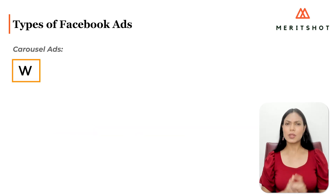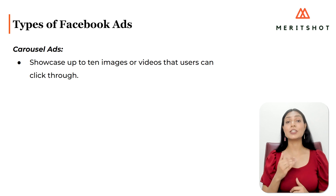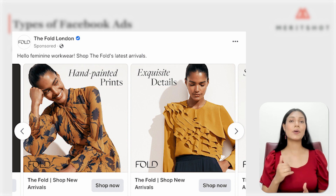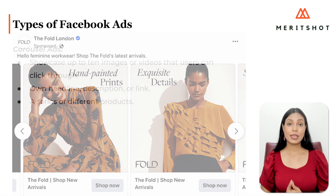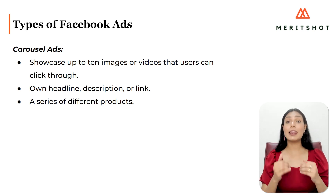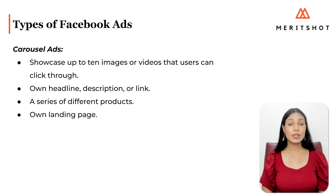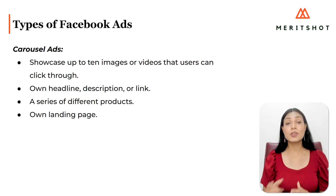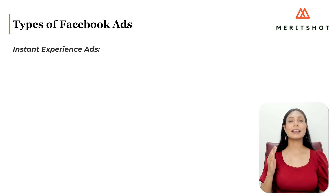Carousel ads showcase up to 10 images or videos that users can click through, each with its own headline, description, or link. Carousels are a great choice for displaying a series of different products — each image in the carousel can even have its own landing page specifically built for that product or service. This format is also helpful for guiding users through a process or showcasing a series of related products by separating each part across different sections of your carousel.